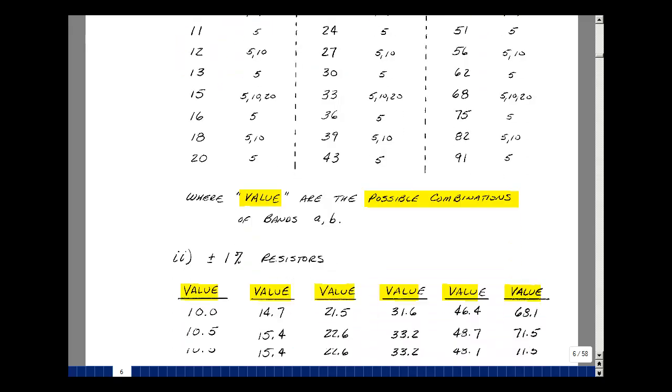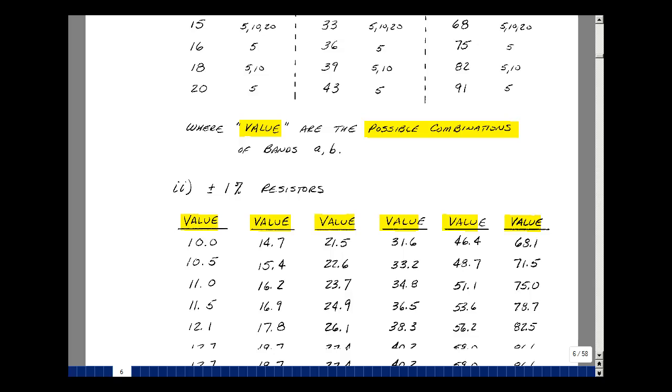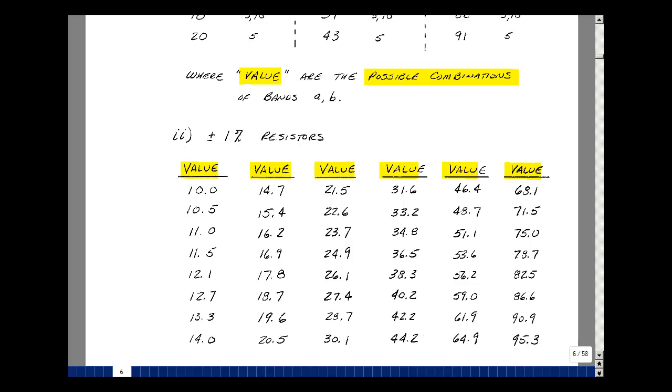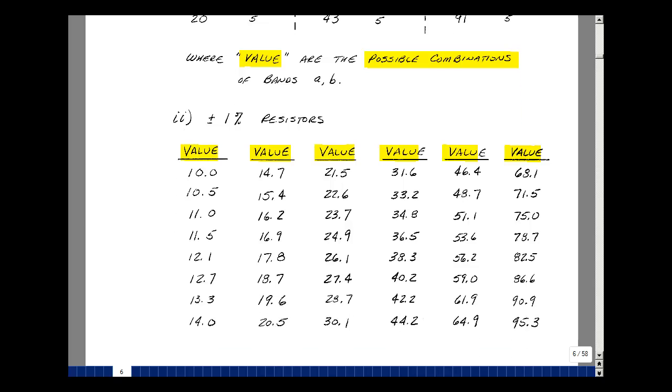There are also precision resistors. I've listed here just the values that you could get with 1% resistors. And here you get three places, and then you can multiply these again by powers of 10 and scale it up from very low to very large values.